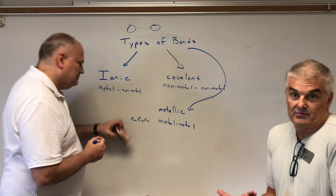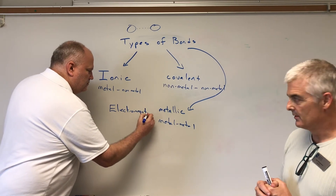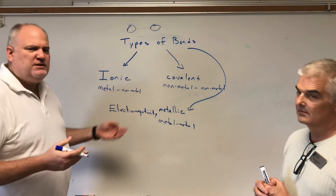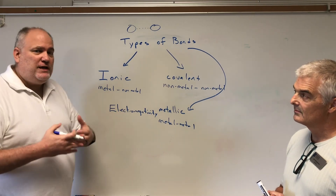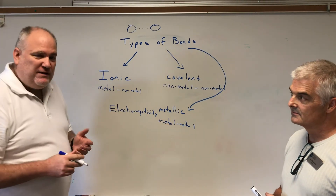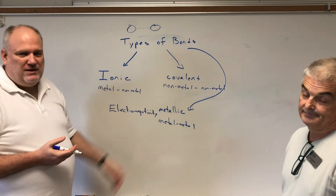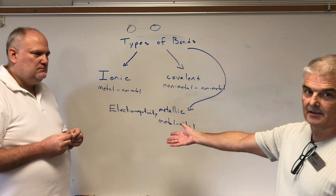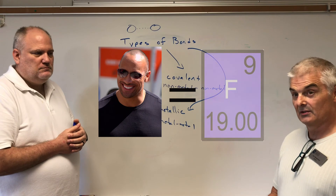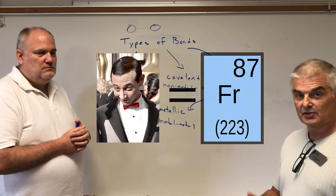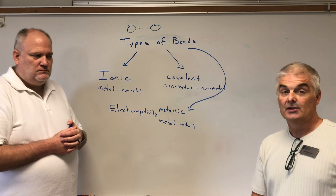Some atoms are stronger than others at attracting electrons, and that term is electronegativity. Electronegativity is essentially how able you are to gain an electron. If you're really able to gain an electron you have very high electronegativity; if you're not very able, you have low electronegativity. That determines what type of bond forms. If both atoms really really want electrons, they have to share. Think of it like: the strongest is like The Rock - very high electronegativity - and fluorine is actually the strongest element. The weakest is francium. Later we'll learn how to identify which elements have the highest and lowest electronegativity.